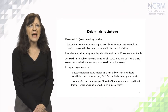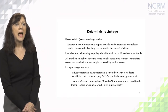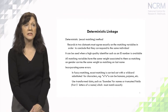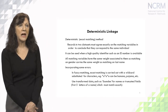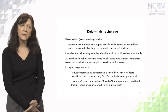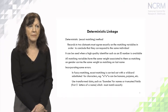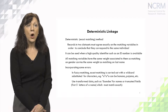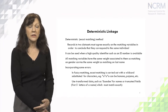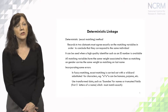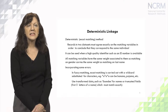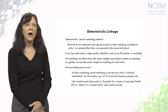In deterministic linkage or exact matching, records in two data sets must agree exactly on the matching variables to conclude they correspond to the same individual. This is usually done when we have a high-quality identifier such as an ID number. All matching variables have the same weight, so matching on gender carries the same weight as matching on last name. Even in deterministic linkage, we can incorporate some errors — for example, in fuzzy matching, this is exact matching carried out with a wildcard or a set of substrings.